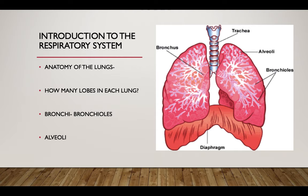Incoming air enters and divides up into the bronchi of each lung. These bronchi branch out into what are called bronchioles — smaller branches of bronchi. Each bronchiole is capped at the end with little sacs of air called alveoli. In appearance, they look like little grape clusters.